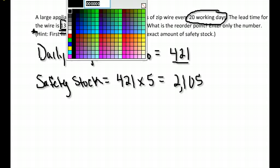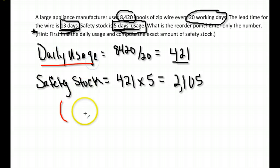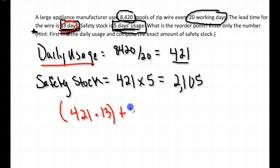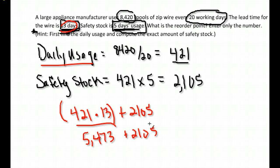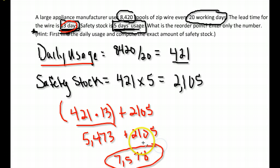We have everything we need now. The formula: daily usage of 421, multiplied by the lead time of 13 days, plus the safety stock of 2,105. Follow order of operations — multiplication first: 421 times 13 gives 5,473, plus 2,105 safety stock. The reorder point is 7,578. When they get down to 7,578 spools, they need to order more — keeping enough on hand without storing so much that it costs too much.